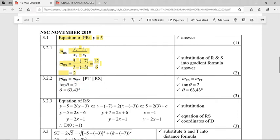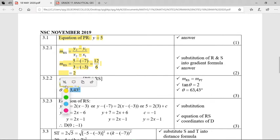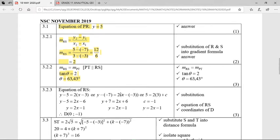Let's see if the memo says that. There it is. The gradient of RS is equal to the gradient of PT. Why? PT is parallel to RS. Please state that. There is a mark for that. Therefore, tan theta is equal to 2. Where did we get 2 from? It's the gradient of our line. Therefore, shift tan 2 makes our angle of inclination or theta 63.43.